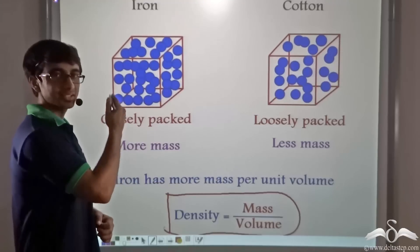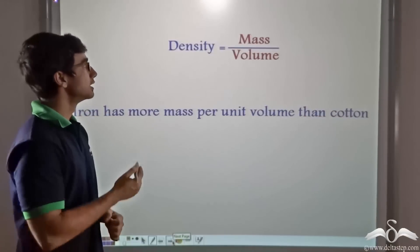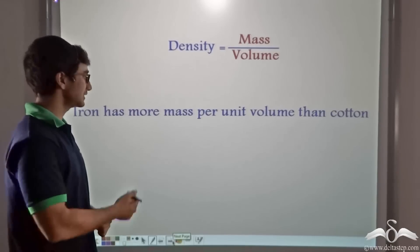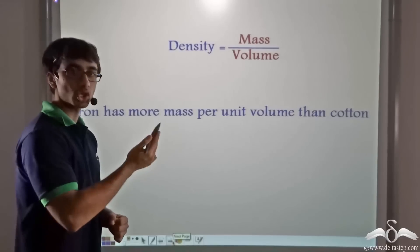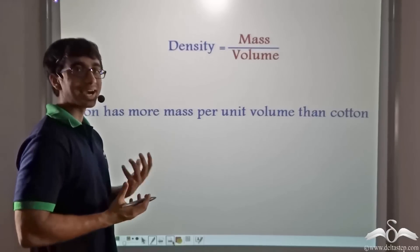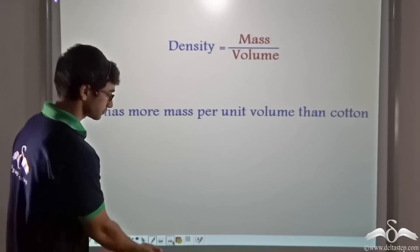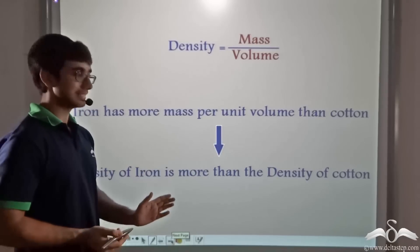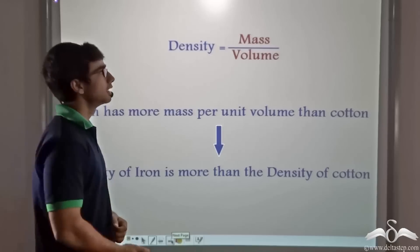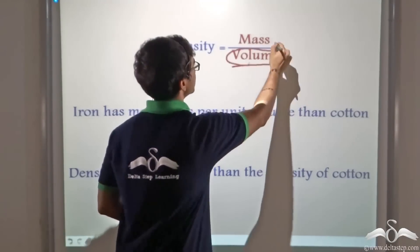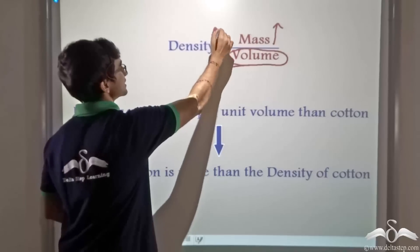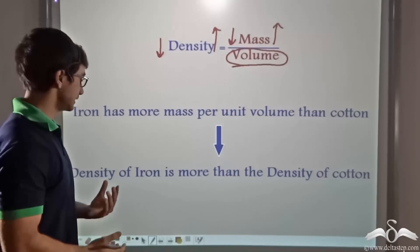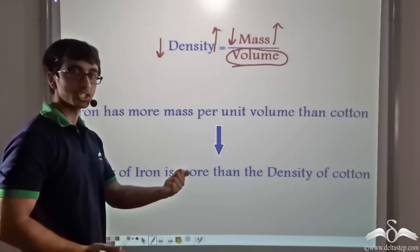So what can we say about iron and cotton in this case? Since density equals mass divided by volume, and we found out that iron has more mass per unit volume than cotton — because in both cases we had considered one meter cube — we can say that the density of iron is more than the density of cotton. Volume remaining the same, if the mass increases the density increases, and if the mass decreases then density also decreases. Thus the density of iron is more than the density of cotton.